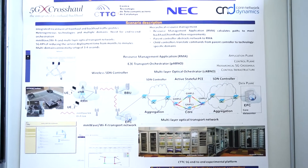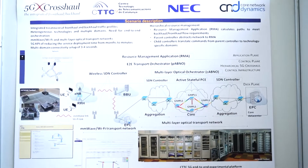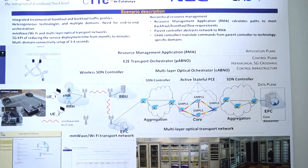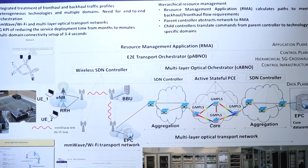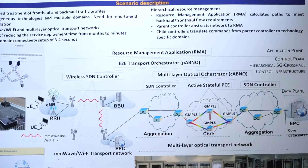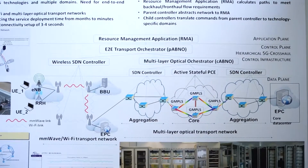We present two demonstrations of this control plane. The first one is based on hierarchical SDN controllers, where we have a parent SDN controller that receives the requests and translates them, sending them to child SDN controllers that are in charge of each specific technology. In this way we are increasing the scalability properties of the network.